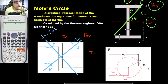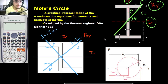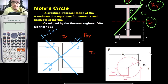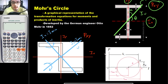Mohr's Circle was developed by German engineer Otto Mohr in 1882, so its usage spans about a century and 40 years. By definition, Mohr's Circle is a graphical representation of the transformation equations for moments and products of inertia. The circle is plotted with product of inertia on the ordinate (y-axis) and moments of inertia on the abscissa (x-axis).